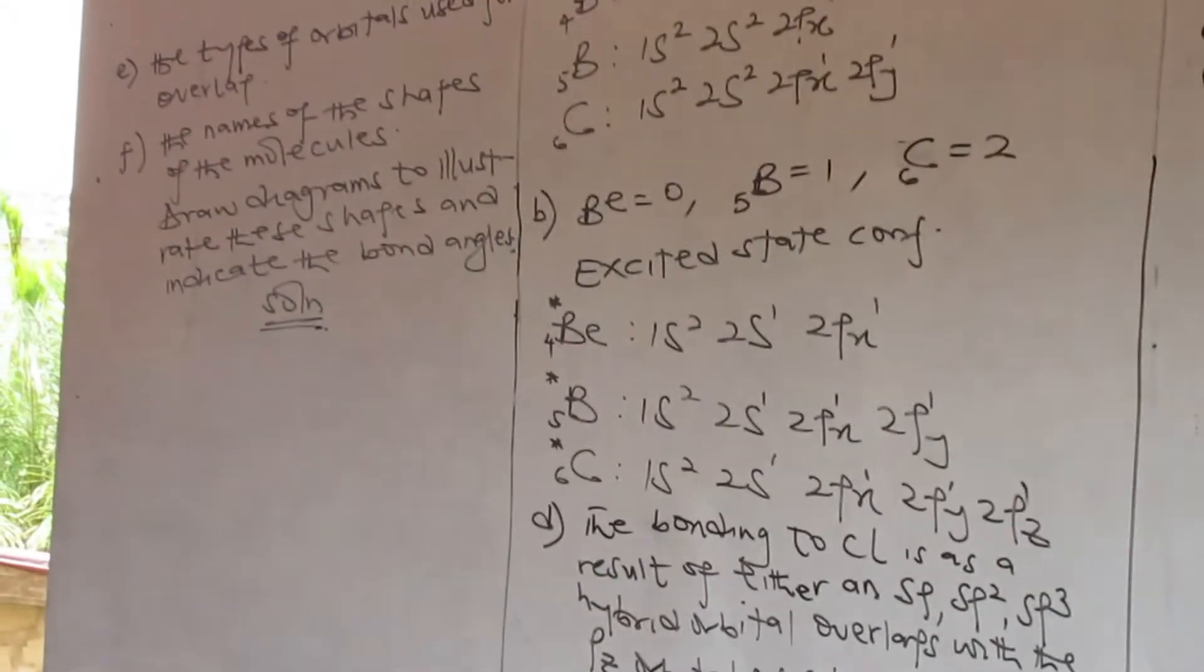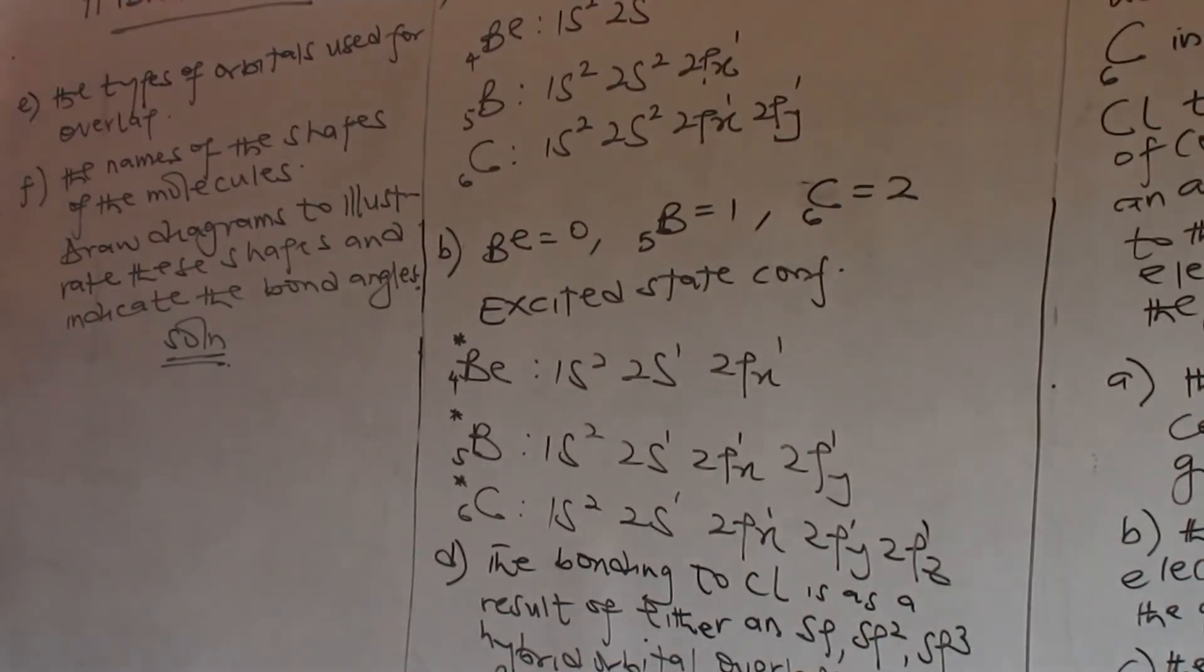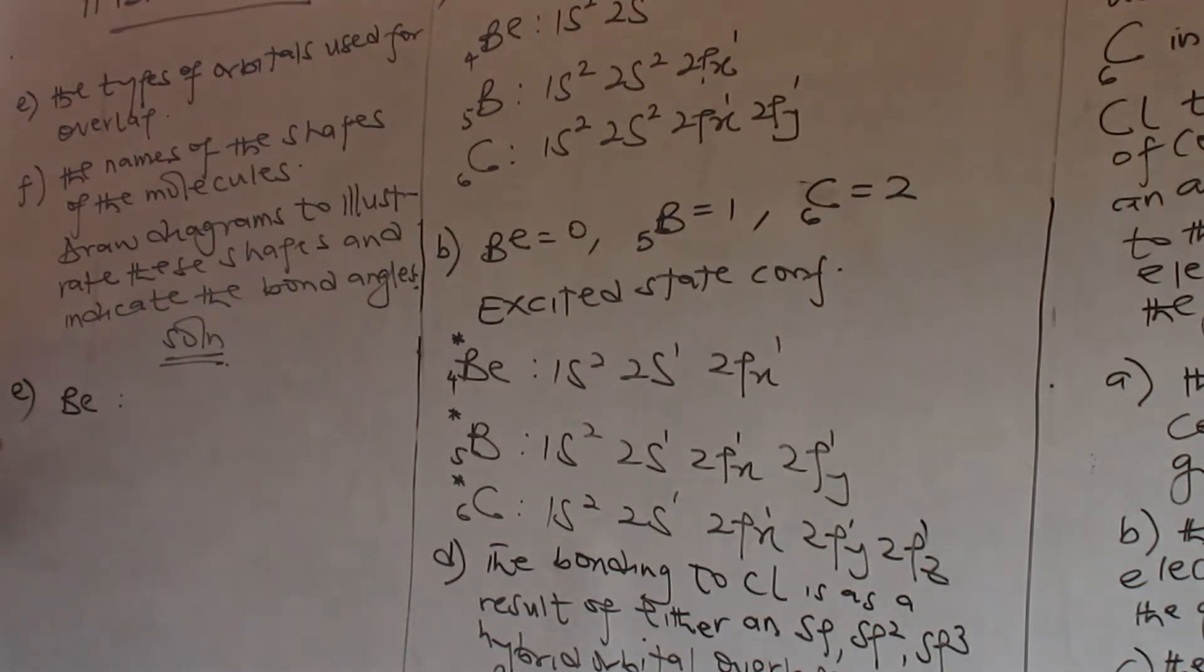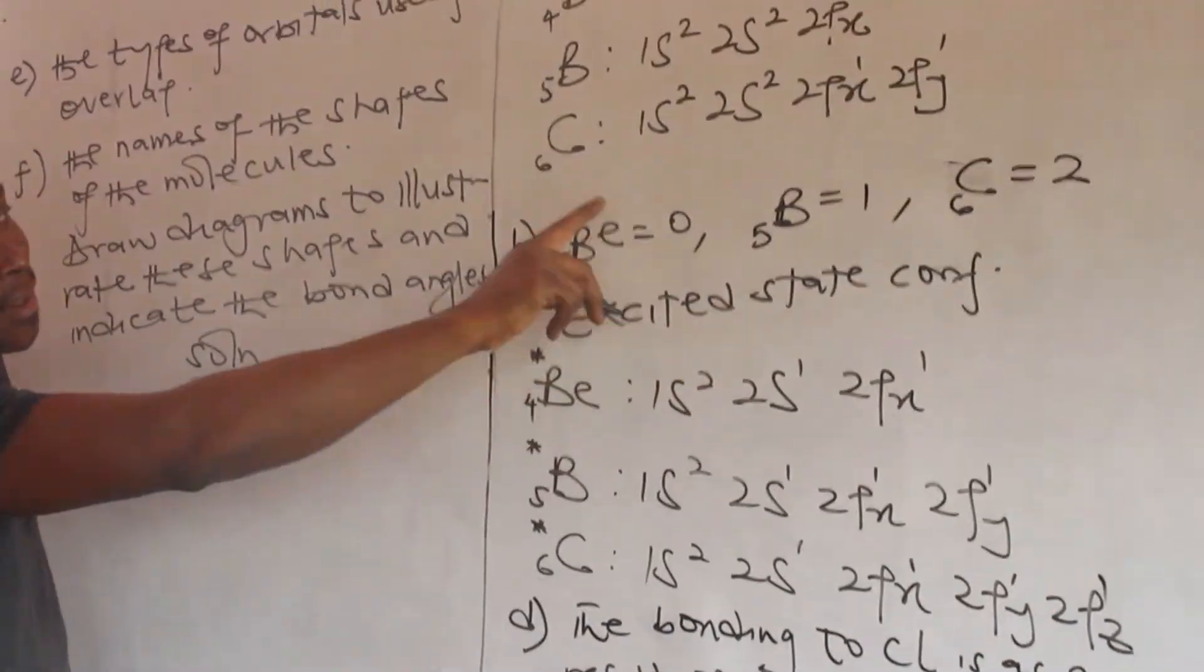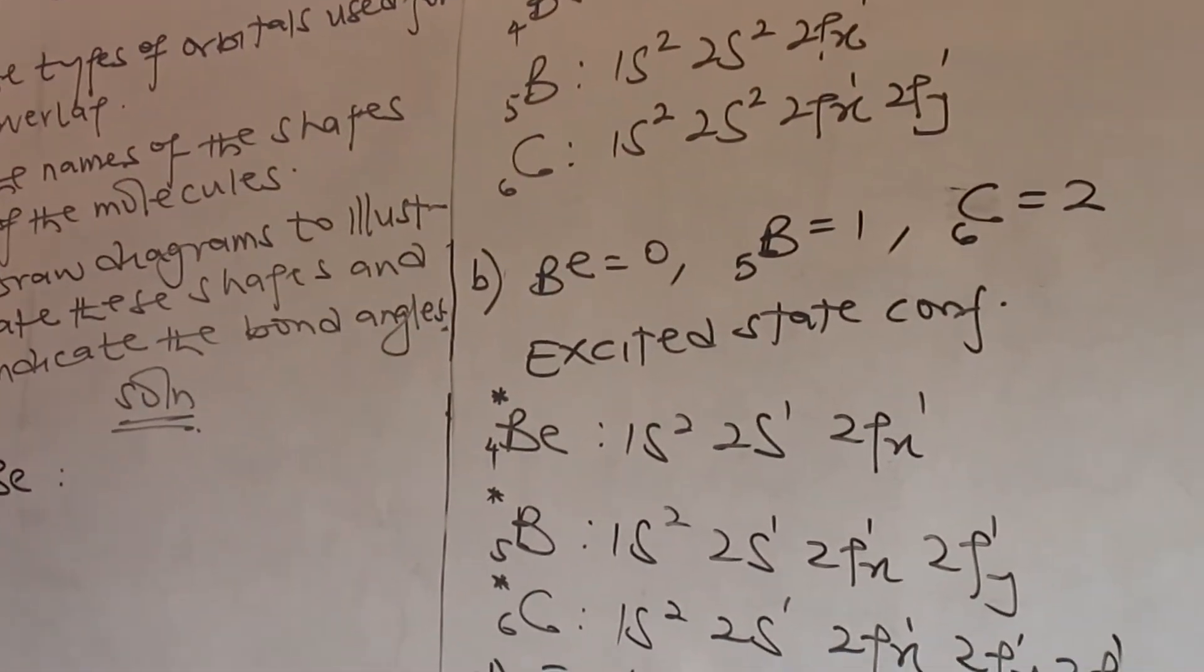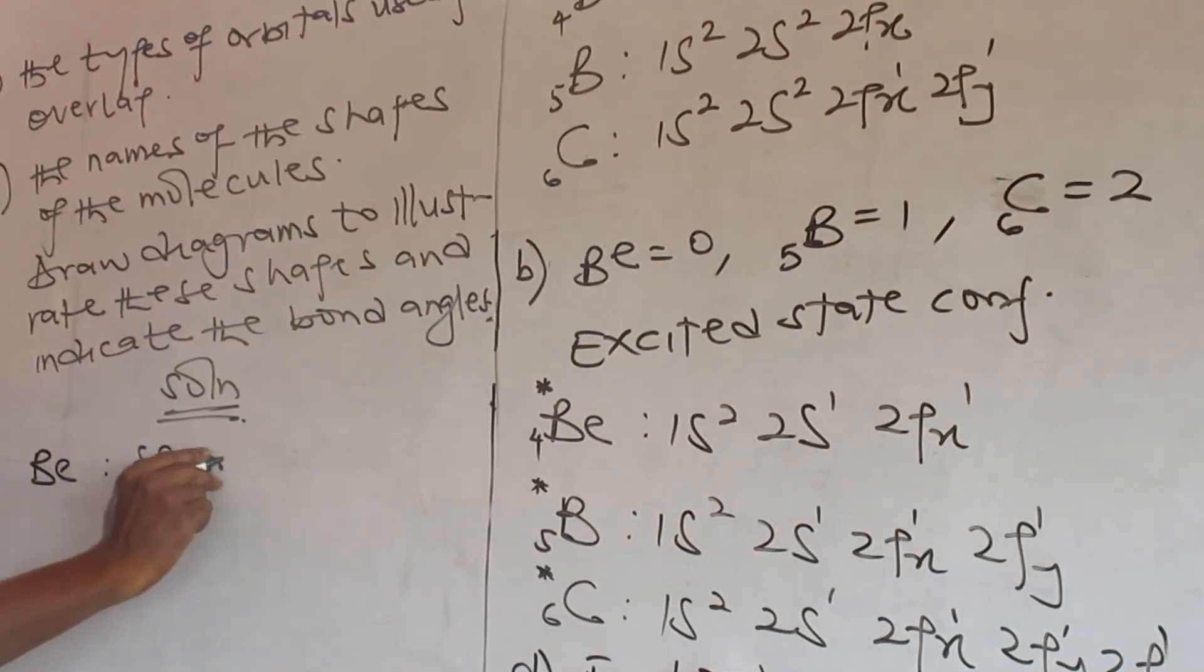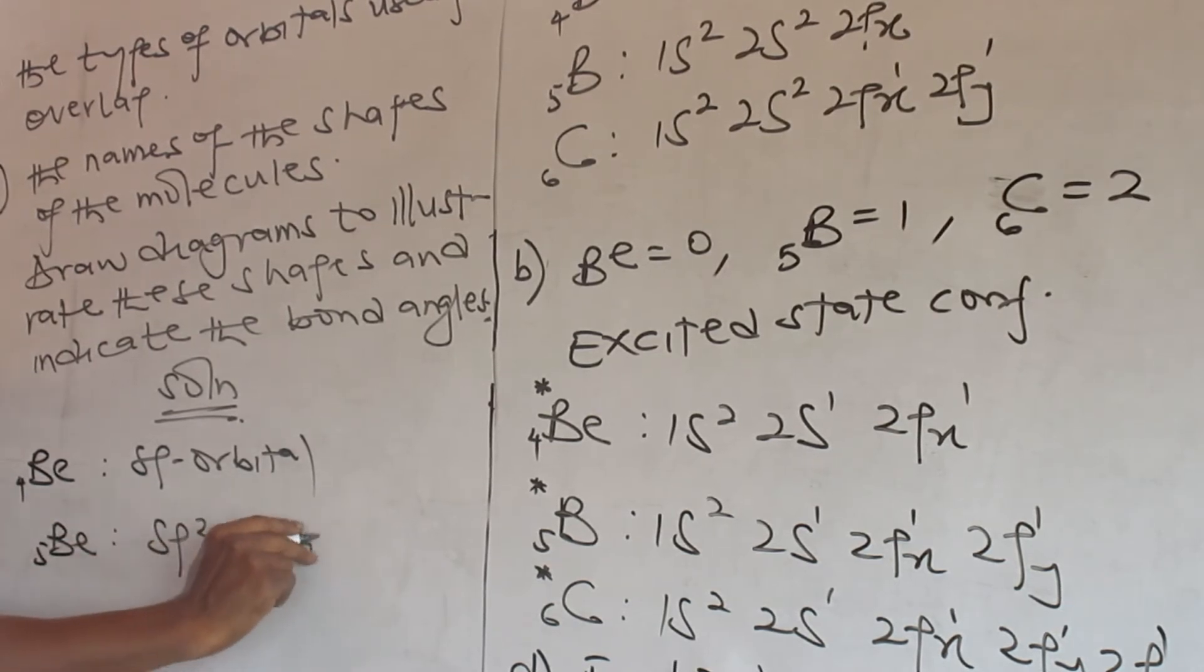Now let's point the types of orbitals used for the overlap. Now when you go to beryllium, what do we use for overlap? Check your excited state, and that's what orbital is for the overlap. We have sp orbital, right? What does boron use for overlap? sp². Carbon? sp³.